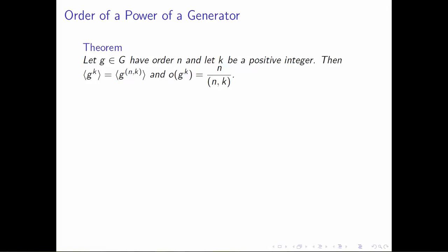That is, you have this group element g, you know precisely how many things are in the group generated by g, but maybe you'd like to know something about a power of g—something that lives inside the cyclic group generated by g—and you'd like to know how big is the group generated by that element. The first thing this theorem says is that the group generated by g raised to the k power is the same as the group generated by g raised to the power of the greatest common divisor of n and k.